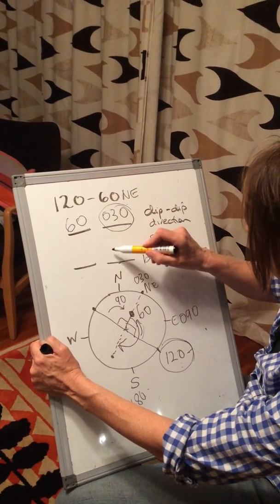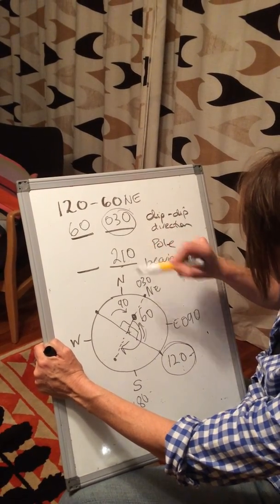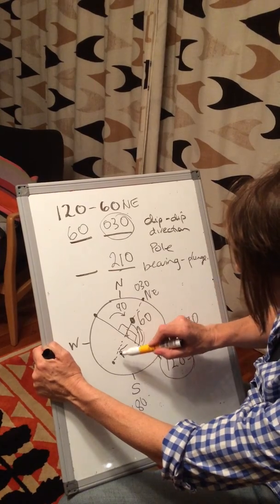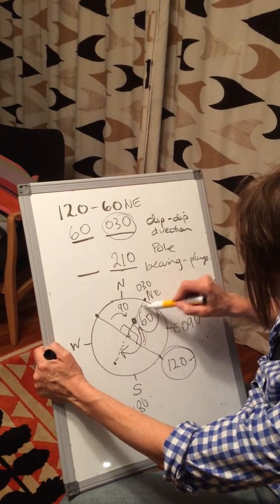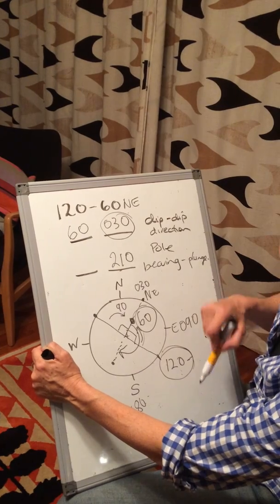180 plus 30 is 210. And what is the actual plunge of the pole? It is the dip, take the dip.